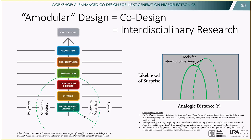Moreover, the likelihood of surprise depends on analogic distance, as illustrated schematically by the surprise curve in green on the right. If analogic distance is short — sticking to one's discipline — the likelihood of discovering something surprising is low, because one stays within the confines of conventional wisdom. If analogic distance is long, the likelihood of surprise is also low, because a single person has difficulty straddling such different knowledge domains. So there's a sweet spot in analogic distance where the likelihood of surprise is highest. Few of us are lone individuals — we work together as groups to straddle bigger and bigger analogic distances.